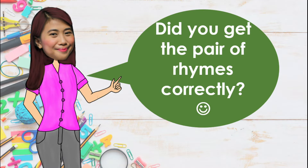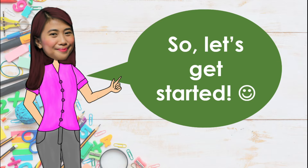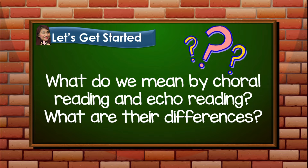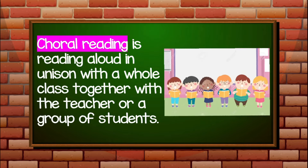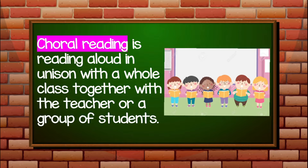Did you get the pair of rhymes correctly? Now I think you are ready to learn. Let's get started! What do we mean by choral reading and echo reading? What are their differences? Let us find out! Choral reading is reading aloud in unison with a whole class together with the teacher or a group of students. Choral reading is composed of two or more persons who are reading aloud in unison. When we say unison, it is acting or speaking together at the same time.